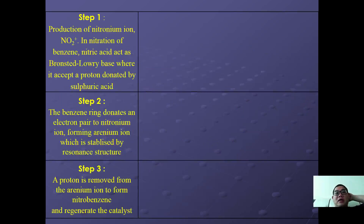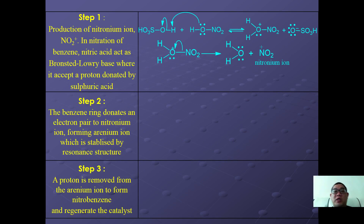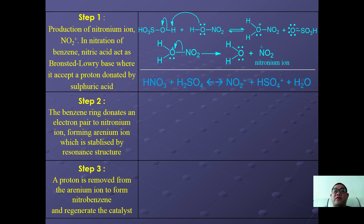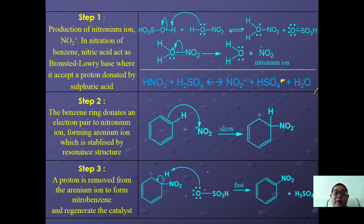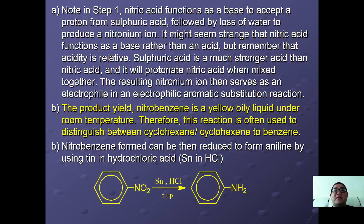The general equation for the formation of the nitronium electrophile is: HNO3 + H2SO4 → NO2+ + HSO4− + H2O. The NO2+ acts as a good electrophile to attack the benzene ring in a slow step, forming an intermediate complex. Finally, deprotonation occurs to reform H2SO4, and nitrobenzene is produced.